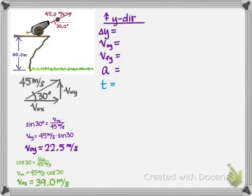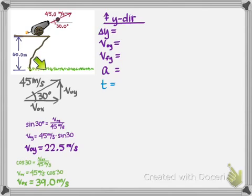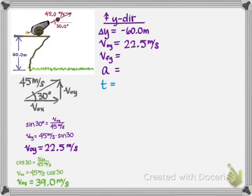Let's fill in what we know. Because up is positive, the cannonball from start to finish goes down — a displacement of 60 meters downward, so delta y is negative 60 meters. The initial velocity in y is positive 22.5 meters per second going up. We don't know the final velocity in y. The acceleration due to gravity is pulling down at 9.8 meters per second squared, so that's negative 9.8.